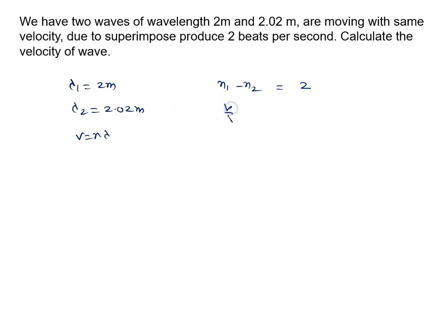We can write v by lambda 1 minus v by lambda 2 equals 2. Since velocity is the same, we can take v out in brackets: v times (1 upon 2 minus 1 upon 2.02) equals 2.